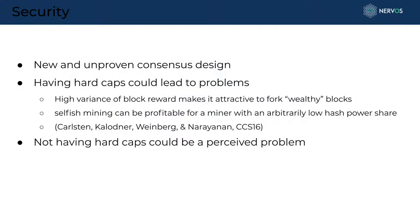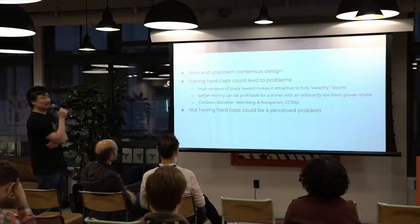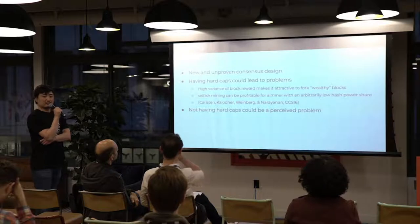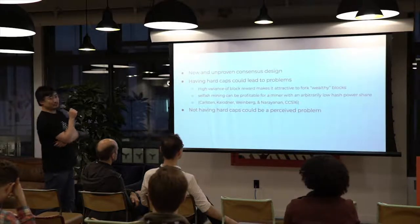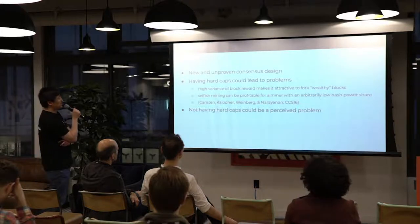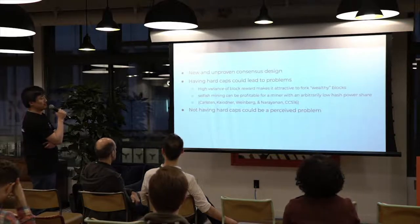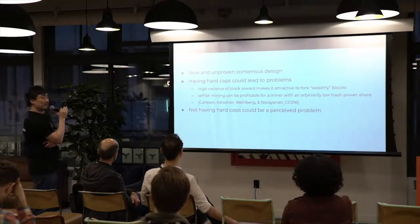We took a look at the current landscape and identified some problems. First we examined security: a lot of the crypto-economics are designed to facilitate the consensus process — giving incentives for participants to reach agreement. But there are also a lot of new and unproven consensus designs. We also studied Bitcoin and Ethereum. Bitcoin has a hard cap, and looking at the literature, we see that having a hard cap could present two problems. This is not something we discovered — a lot of newer projects are moving toward a no-hard-cap model.